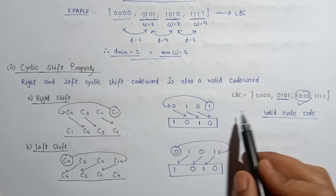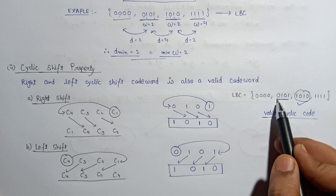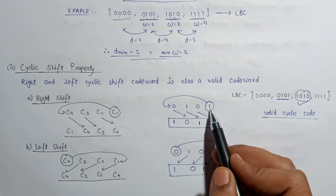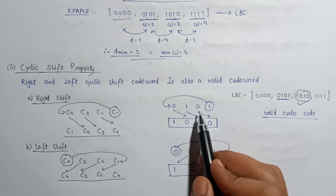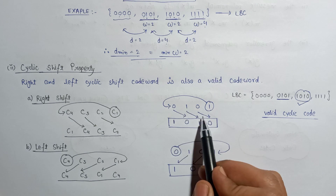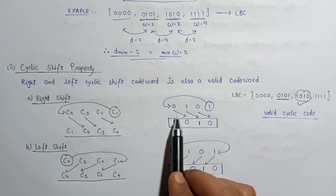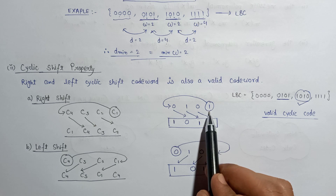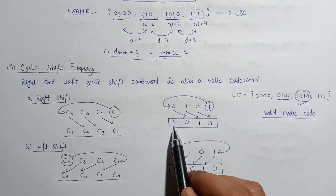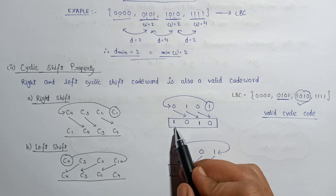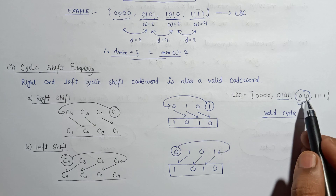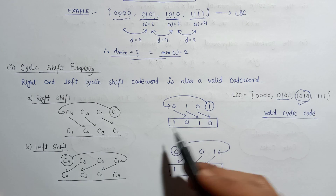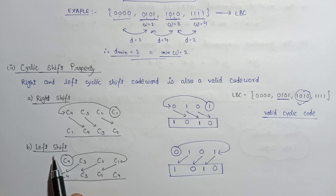Let's verify using the codeword 0101. Performing the right shift: the last bit 1 moves to the front, and the remaining bits shift right, giving us 1010. Checking if 1010 is present in the linear block code — yes it is. So the right shifting property is verified.